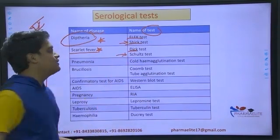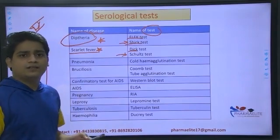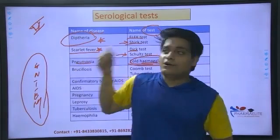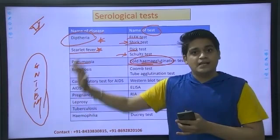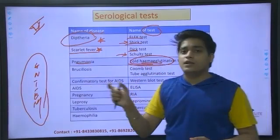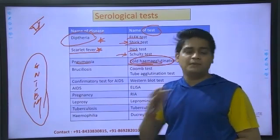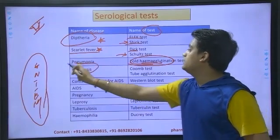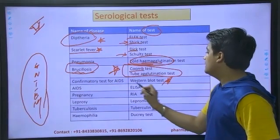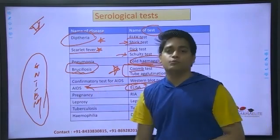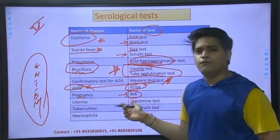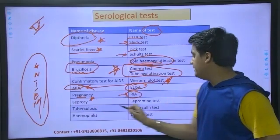Another test is used for identification of scarlet fever. For pneumonia and COVID in the early phase, the cold hemagglutination test is used. Sample reagents — frequently asked questions type 3. Moving further, the Schultz-Charlton test is very, very important. Another important one is ELISA — used for AIDS, pregnancy, and leprosy. Easy to remember from the chapter of immunology.